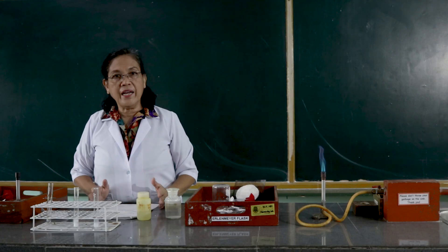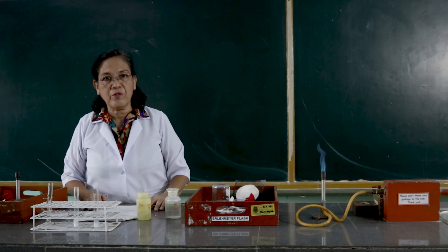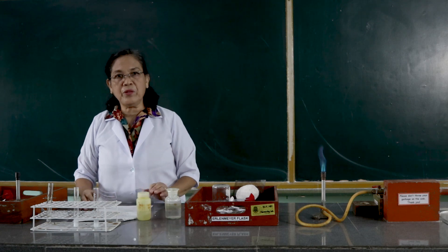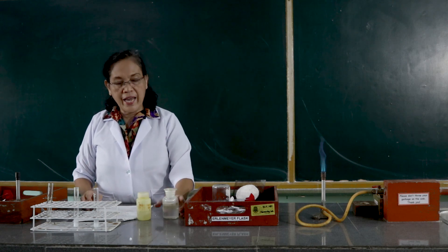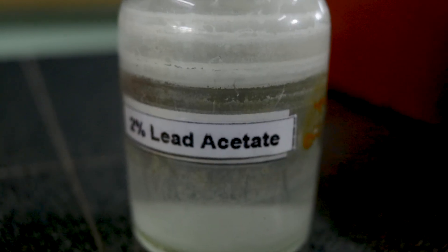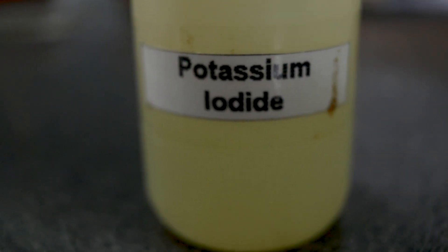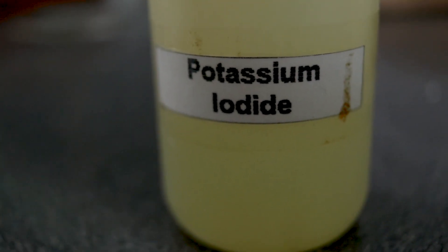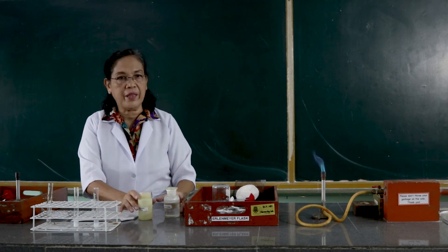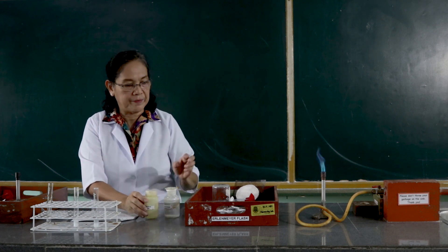Another double decomposition reaction that we are going to perform is the reaction between lead acetate and potassium iodide. We will get 3 ml of the lead acetate and add it with 3 ml of the potassium iodide.